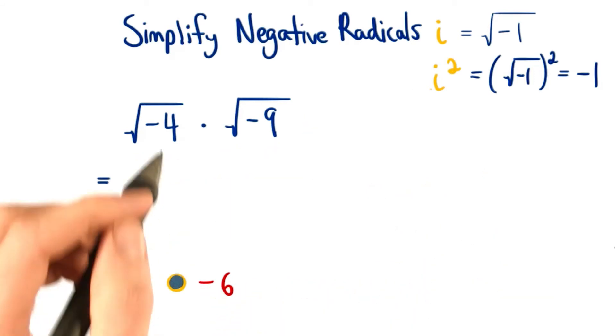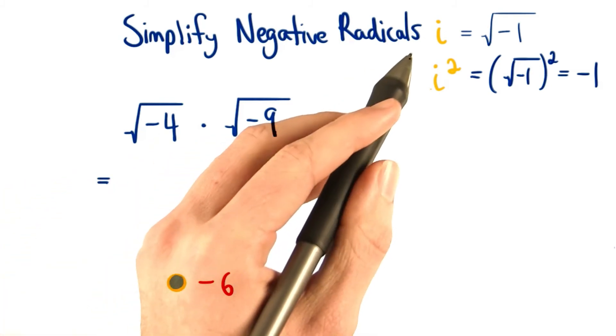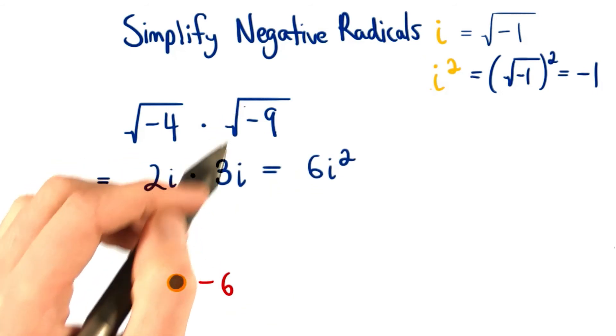Instead of multiplying these radicands together, let's simplify each one by using our imaginary number i. So we'll have 2i here, and 3i for here.